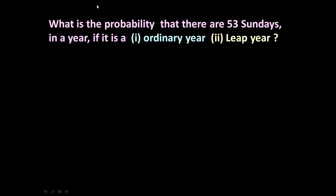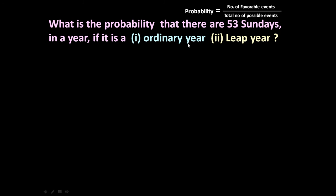To answer such a question, in a year 52 Sundays are always there, but some extra days are also there. Before we start, let us write down the formula: probability is equal to the number of favorable events divided by the total number of possible events. This formula remains the same throughout.